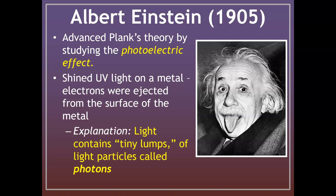The explanation that Einstein came up with was that light contains tiny lumps, similar to what Max Planck was talking about — that light emits particles, almost like little energy packets called quanta. Einstein then denoted the names of these particles to be called photons.